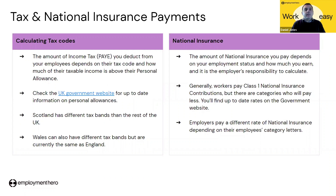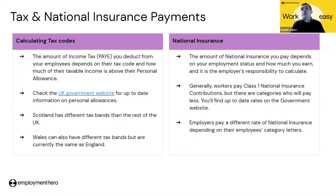Regarding National Insurance and PAYE payments: the amount of income tax you deduct from your employee depends on the tax code assigned to them, and HMRC will assign the tax codes via a notice. It will determine how much personal allowance an employee gets — that is, the amount of money they earn before they are taxed. I would advise you to check the UK government website for up-to-date information on personal allowance because it changes with every budget. Scotland has different tax bands from the rest of the UK, and Wales also has the right to set different bands but currently mirrors the UK rates.